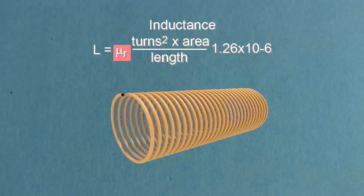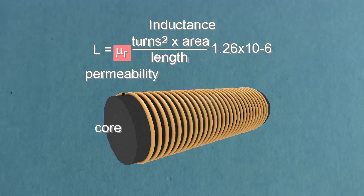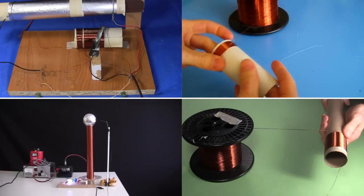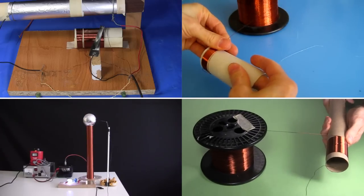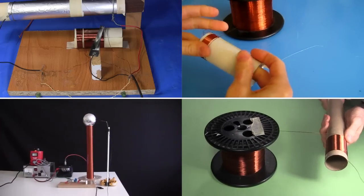This Greek letter mu, and the r, is called the relative permeability, though we often just say permeability, even though that's not strictly right. It's the permeability of the core. The core is whatever the coil is wrapped on. In the case of my crystal radio's coil and my Tesla coil's secondary coil, they're both wrapped on a cardboard tube, which is pretty much the same as air.